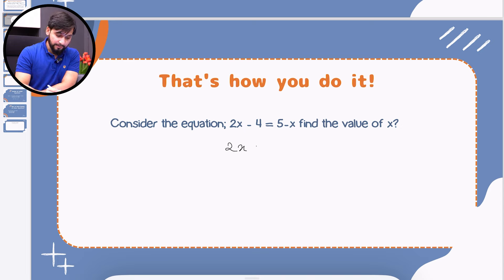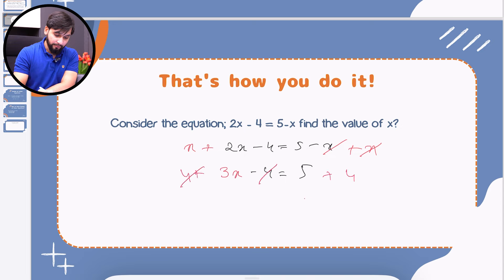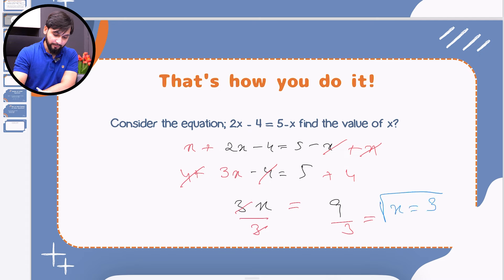We have 2x minus 4 equals 5 minus x. We add x on both sides, so x cancels out and this becomes 3x. The equation is now 3x minus 4 equals 5. We add 4 to both sides — the 4 cancels out and we have 9 on the right. So 3x equals 9. We divide both sides by 3, and x equals 3. That's the simple process of the linear equation — isolate the variable.